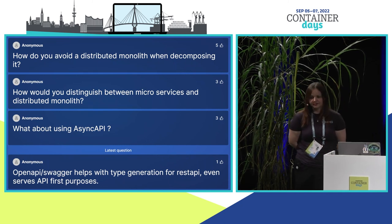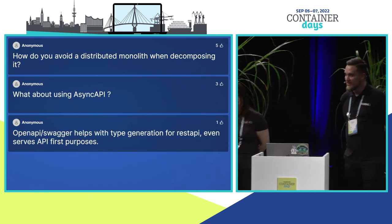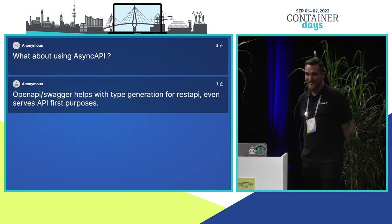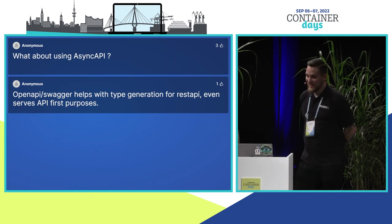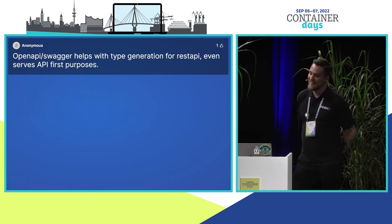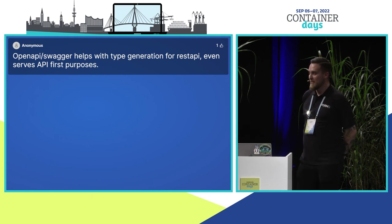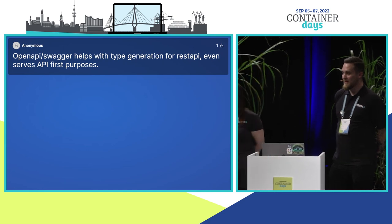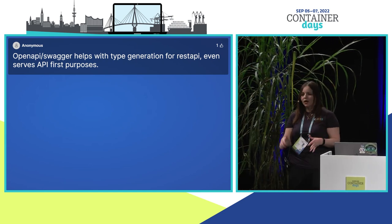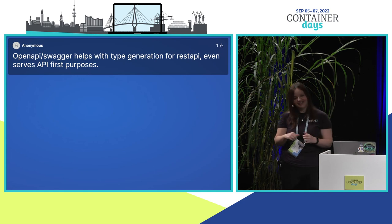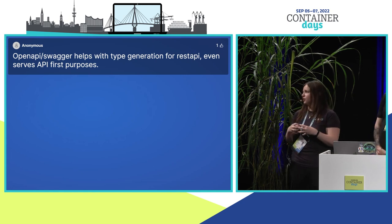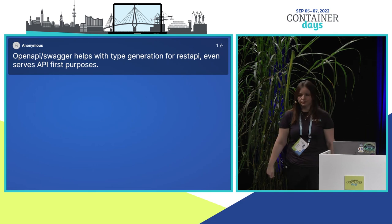What about using async API? It still rests underneath, so it is async in some sense. A statement from the audience: OpenAPI or Swagger helps with type generation for REST APIs, even serves as API-first. We are aware of this and understand it does code generation — Artur even mentioned it. But it's not native code generation, which is what we meant — you'll have to pull in an extra dependency in your deployment flow.